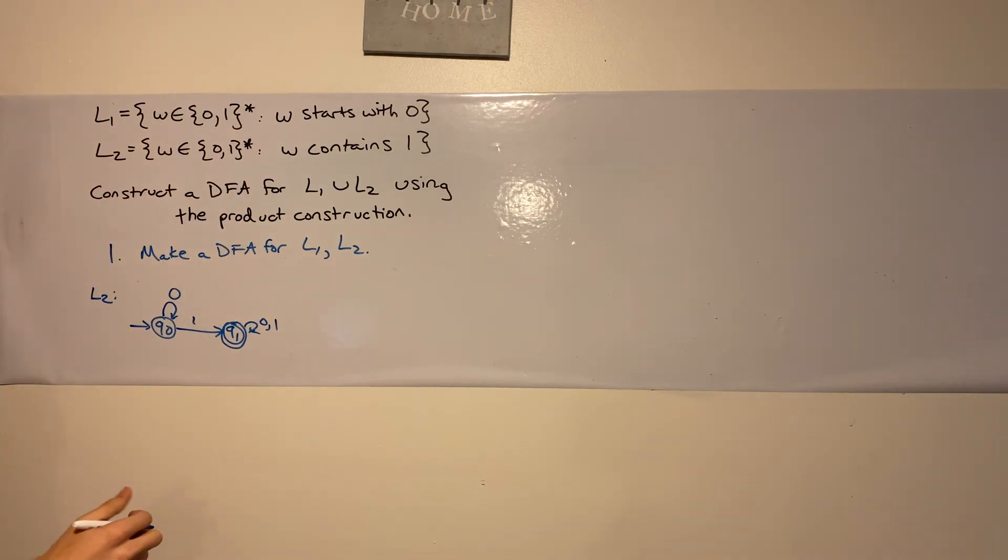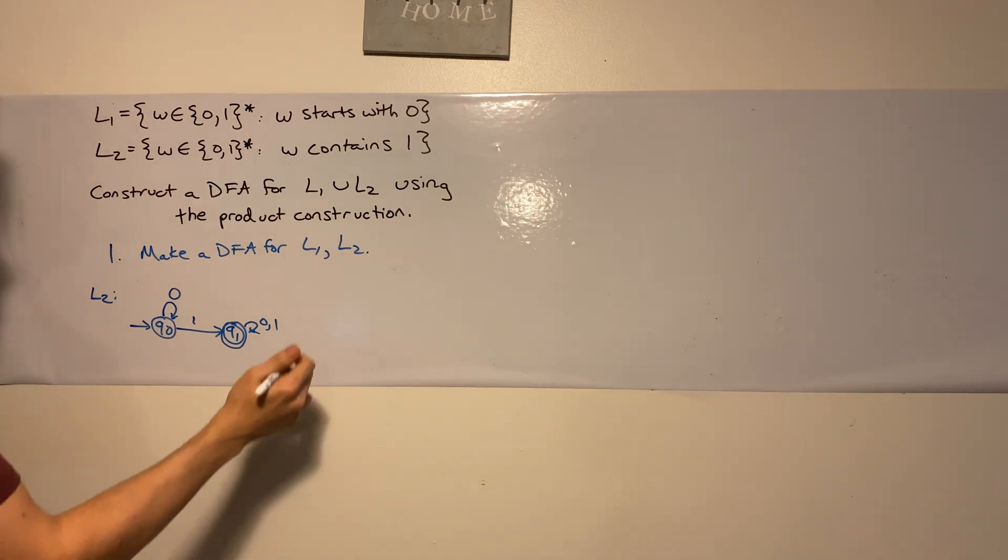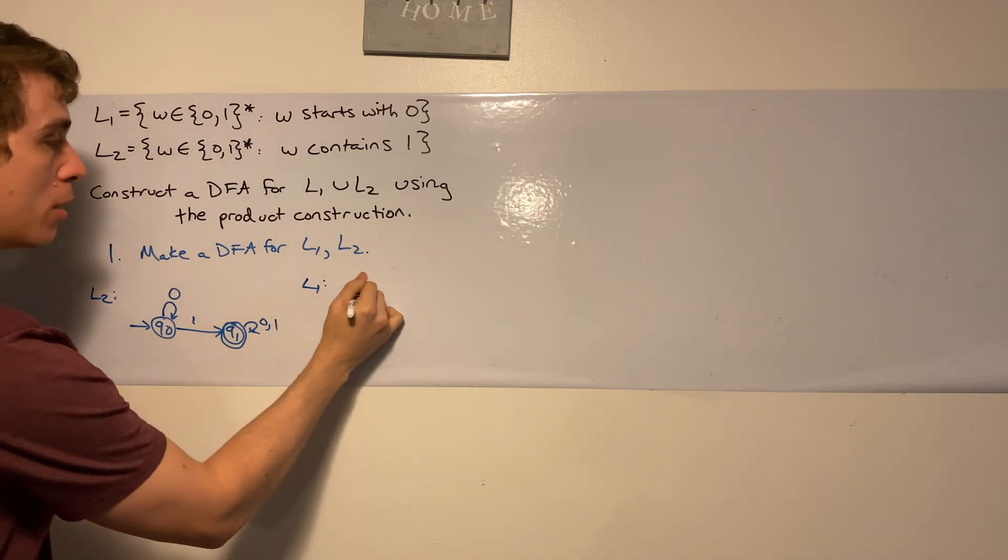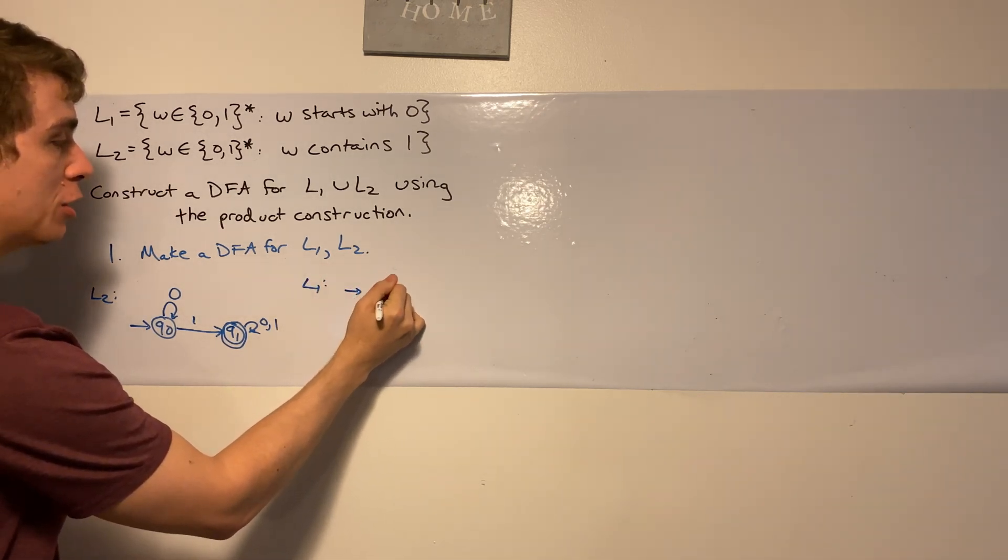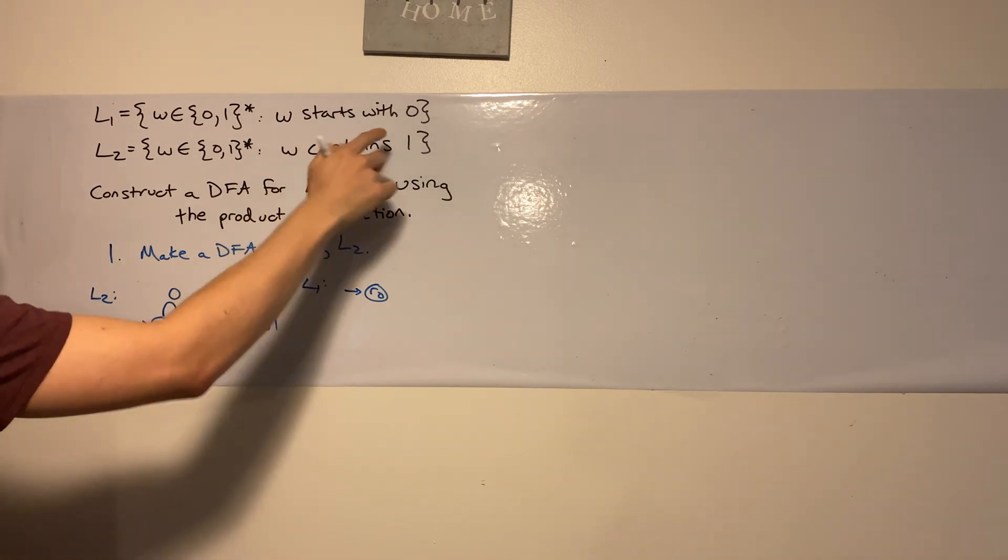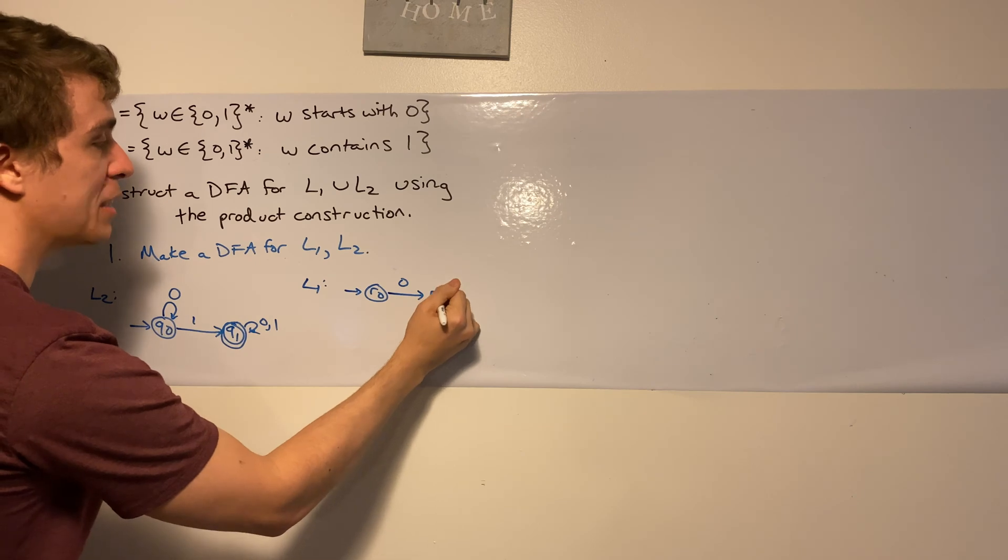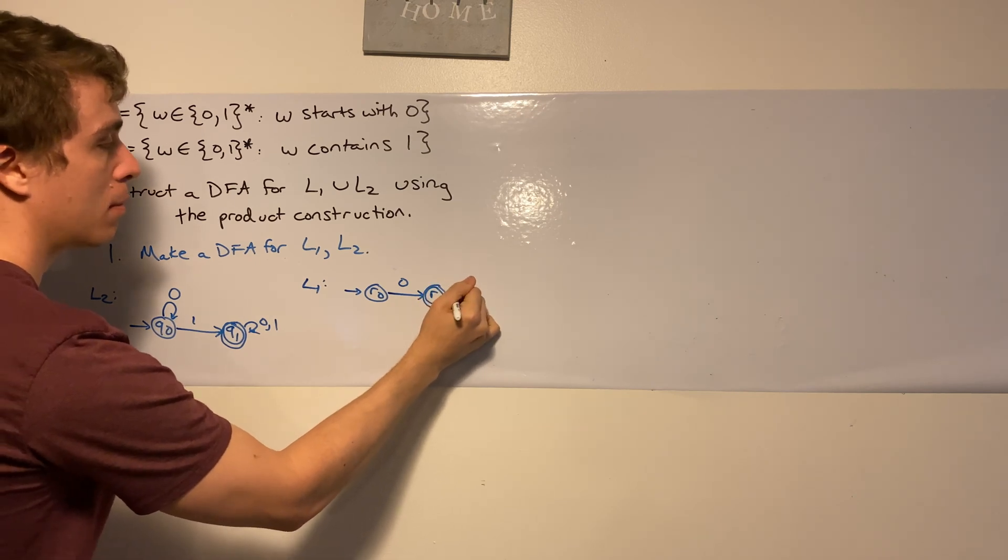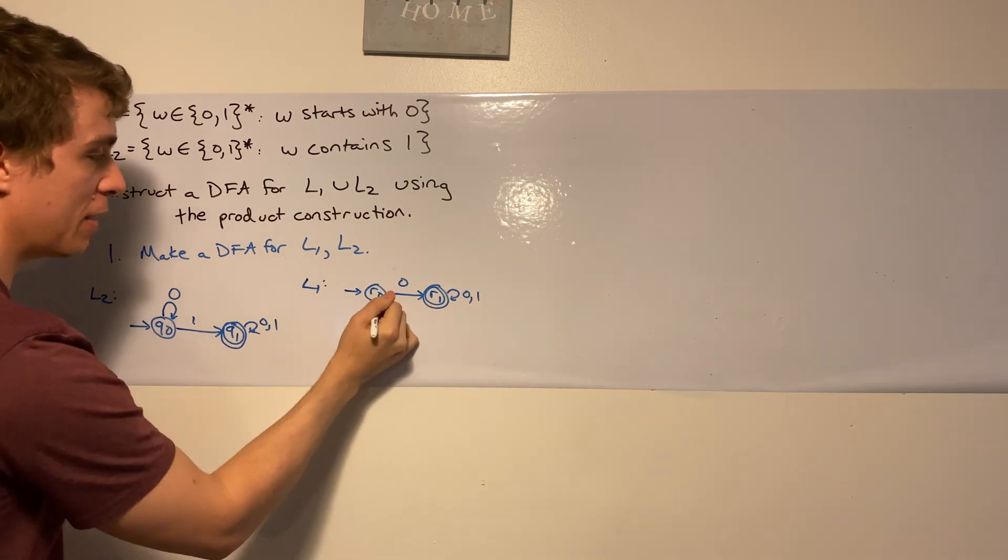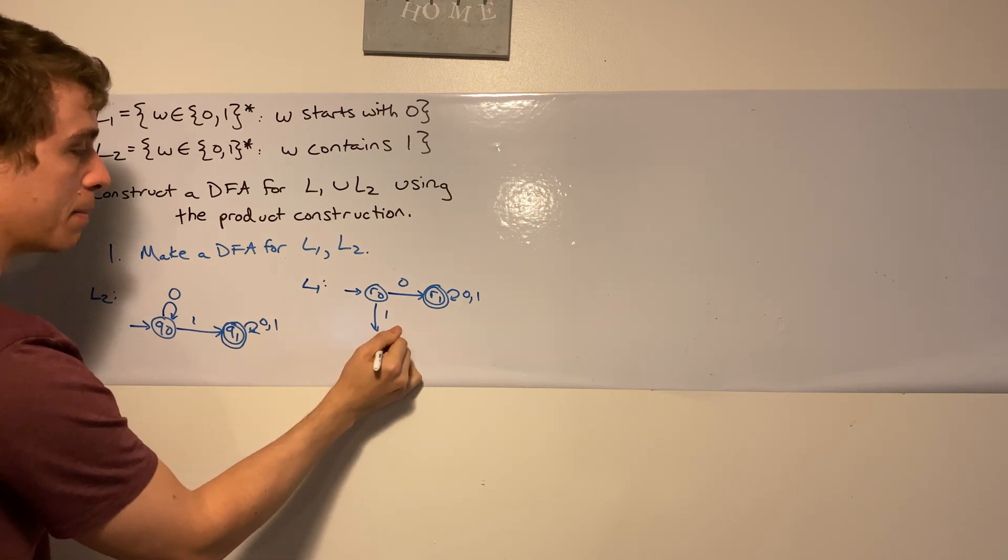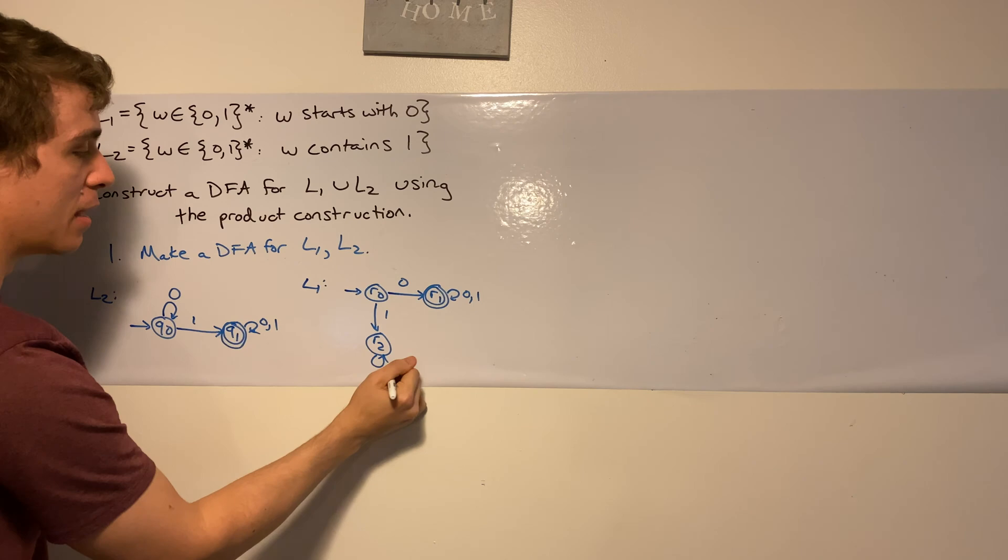And then for L1, if it starts with a 1, we should never accept. So for L1, I'm going to call its states R0 and so forth. So if it starts with a 0, then we should always accept. And if it starts with a 1, then we should always not accept the string. So we have a dead state here.